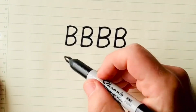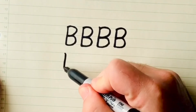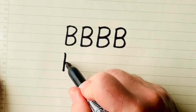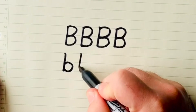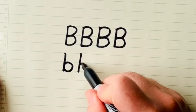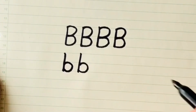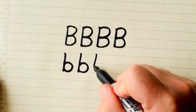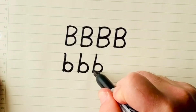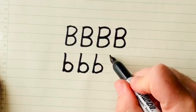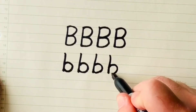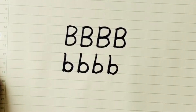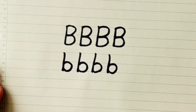Let's try some lowercase b's. Remember, we go straight line down, and then we do a circle. B. Straight line down, and a circle. B. Straight line down, circle b. One last time — straight down, and a circle b. You did a great job learning your capital B and your lowercase b.